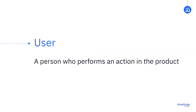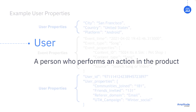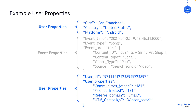In addition to event data, Amplitude also collects user data. A user is a person performing actions in your product. A user property is an attribute specific to each user that describes the state of the user. For example, here we can see properties relating to where the user is located and what platform they're using. We can also see the number of communities they have joined, how many friends they have invited, how they were referred, and through what advertising campaign.